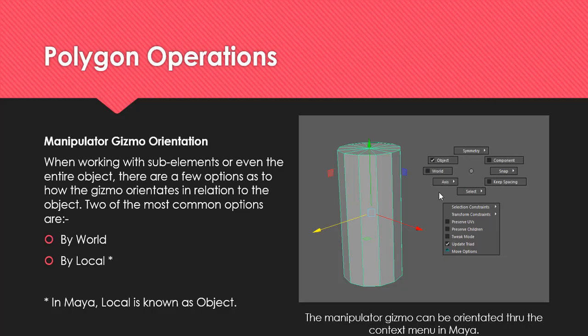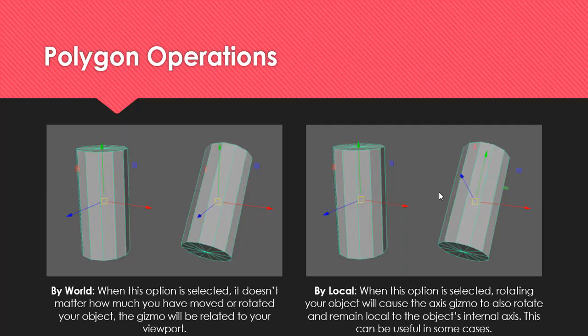In Section B — structured questions where you need to explain more — I will ask about manipulator orientation: basically two ways, by world or by local in Maya (also known as object). Read through this slide and really understand how by world is different from by local. I want you to really understand and differentiate between the two.